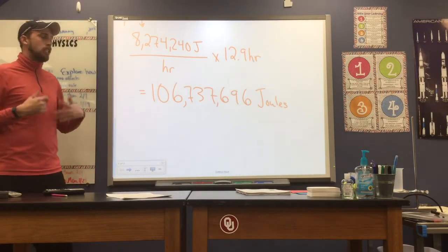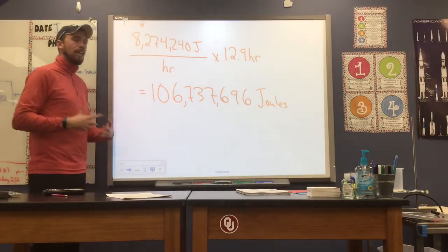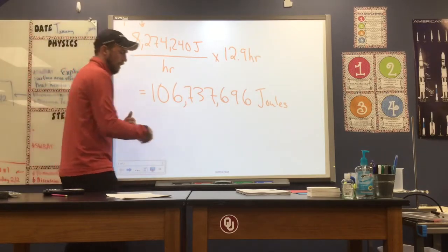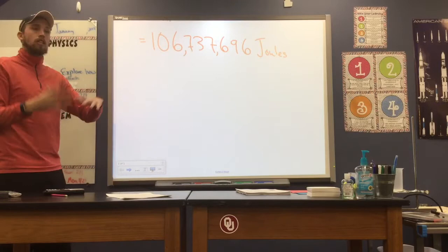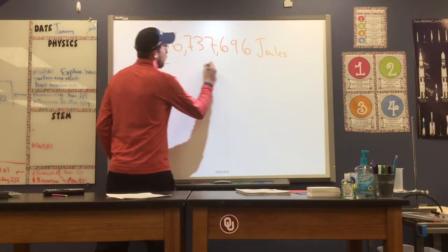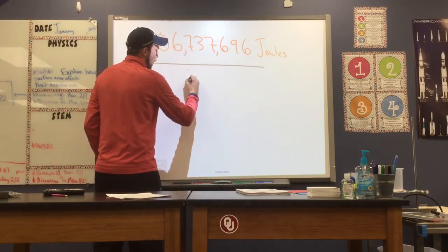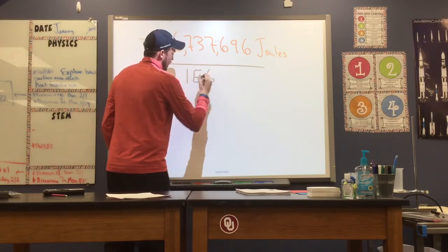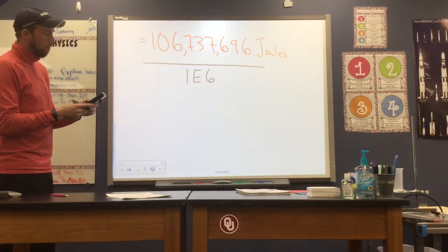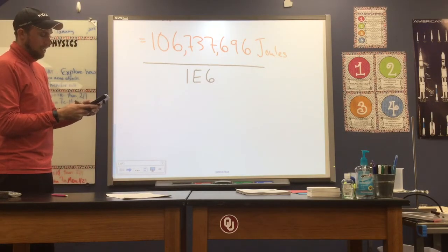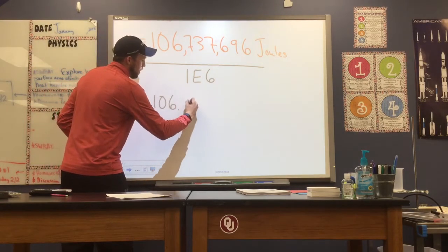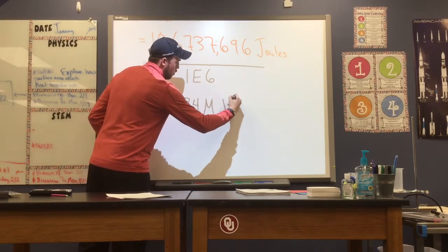Now, I believe the question is asking us to present this in units of megajoules. Mega is not a prefix that we've used a lot in this class, but we have touched on it just a bit. And to get to the mega prefix, we move over a power of 10 to the sixth. So what I'm going to do now is I'm going to divide this number by 1e to the sixth. So remember that 1e to the sixth is the same as 10 to the sixth power. So we'll divide by 1e to the sixth. That's going to give me a value of 106.74 megajoules.